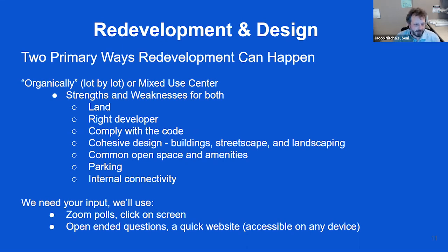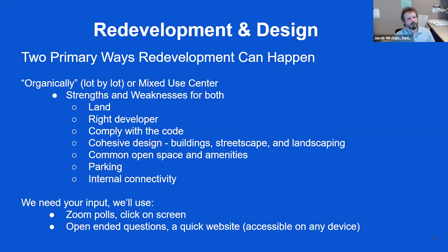There are strengths and weaknesses to both redevelopment approaches. For organic lot-by-lot, land ownership is a clear strength — you own the property and redevelop it. Mixed-use centers often require land assembly, acquiring multiple parcels, the right developer, and a longer process for both land acquisition and build-out. Complying with code is much easier lot-by-lot where you have clear zoning standards. Mixed-use centers typically go through a PUD — planned unit development — process, which is essentially a custom zone district where every detail is worked out with the developer and city staff, making it a more onerous process.